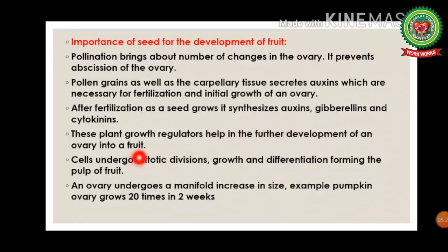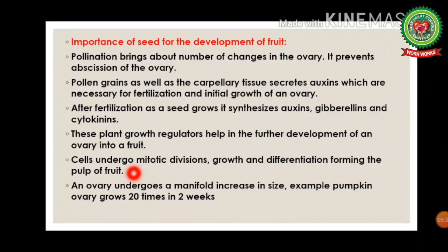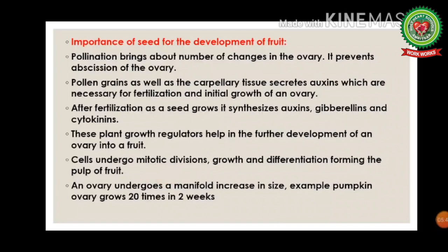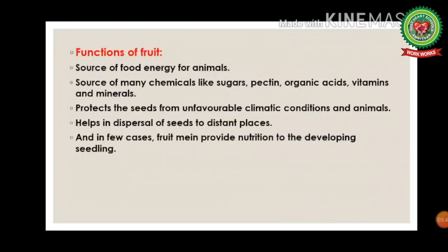After fertilization, as the seed grows, it synthesizes auxins and other plant growth hormones such as gibberellin and cytokinin. These plant growth regulators help in the further development of the ovary into a fruit. Cells undergo mitotic divisions, growth, and differentiation forming the pulp, and the ovary undergoes a manifold increase in size. A best example is pumpkin, where the ovary grows 20 times in two weeks.